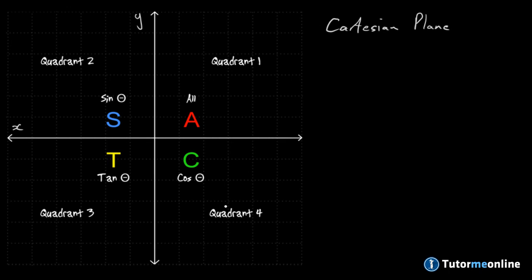In our fourth quadrant we have the cosine function. CAST is an acronym we use for our CAST diagram, standing for Cosine, All, Sine, and Tangent. That's just an easy way to remember our diagram.